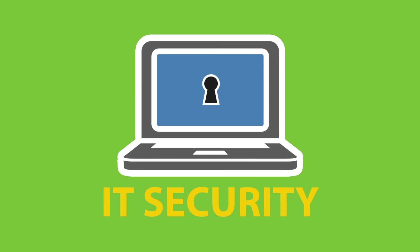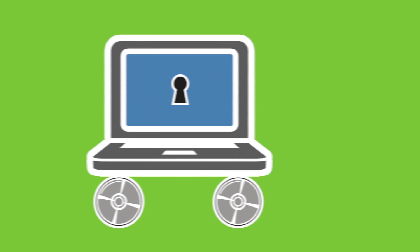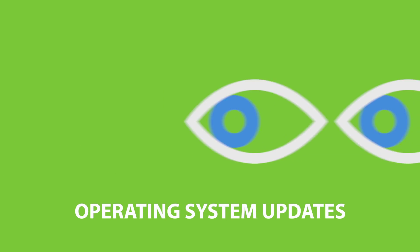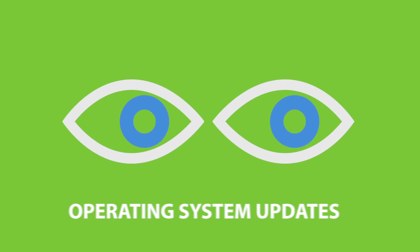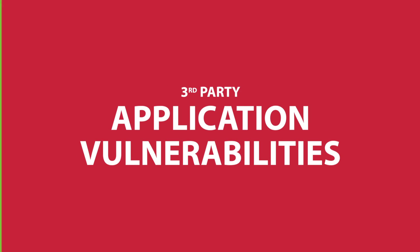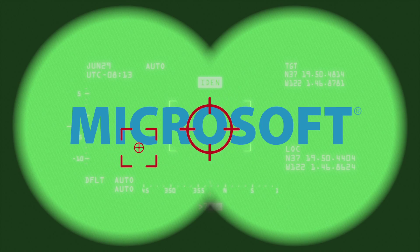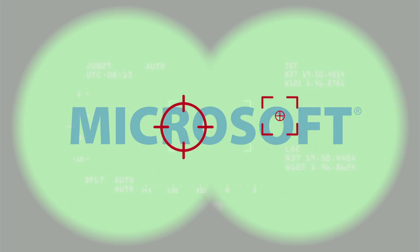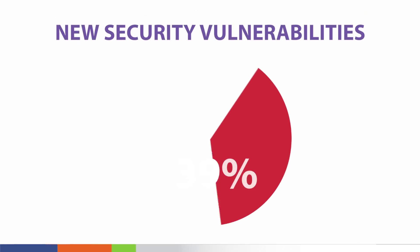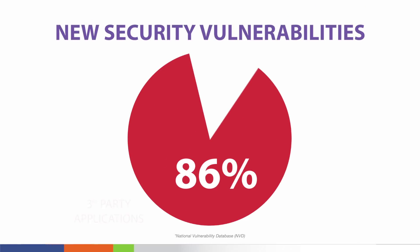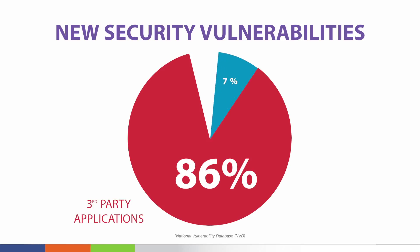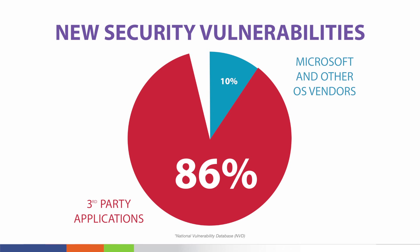When it comes to IT security, many organizations focus on operating system updates while turning a blind eye to the hazards of third-party application vulnerabilities. Microsoft used to be the most vulnerable and actively targeted software, yet research shows that 86% of new security vulnerabilities are found in third-party applications and only 10% in operating systems from Microsoft and other OS vendors.